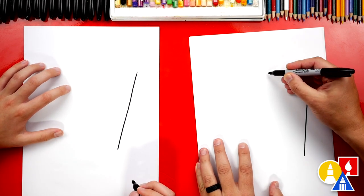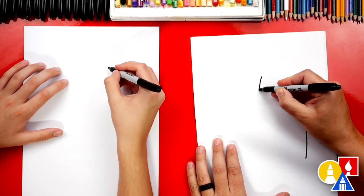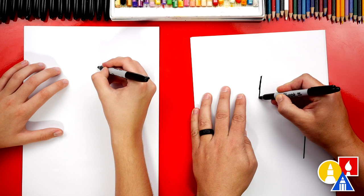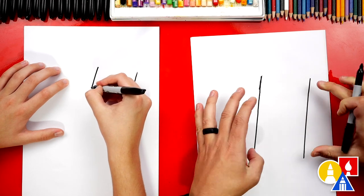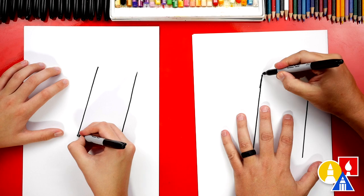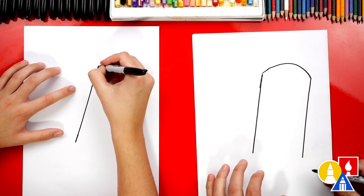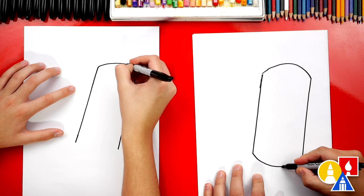Then we can come over here and we're going to draw the other side and we're going to draw another diagonal line that matches the same length. Then we can draw a curve to connect the top and also a curve to connect the bottom.